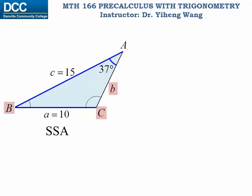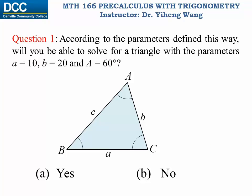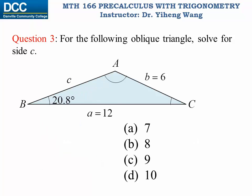Just in case you are curious about our earlier calculation of an acute angle C — this is what that triangle would look like. As you can see, it has the same angle A, same side c, same side a, but a different angle C — this time the acute angle of 64.5 degrees. This is why the SSA situation is known as an ambiguous situation, since you can draw more than one triangle that satisfies the same measurement criteria.